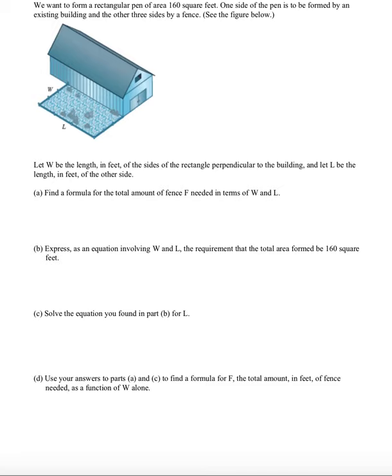Our goal in this example is to form a rectangular pen of 160 square feet of area. One side of the pen is going to be formed by an existing building, so we don't have to put fence on that side. Find a formula for the total amount of fence in terms of W and L.